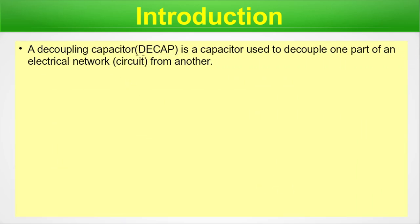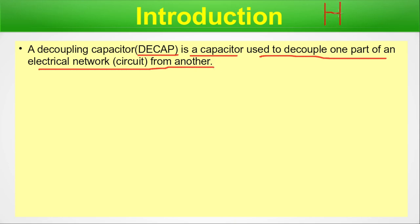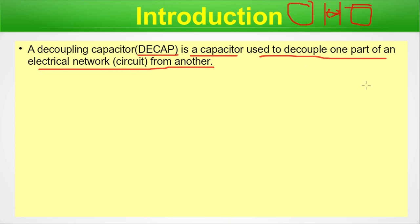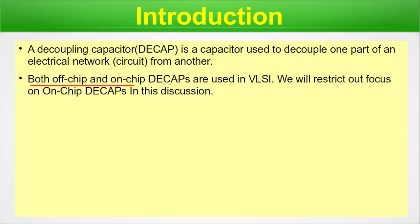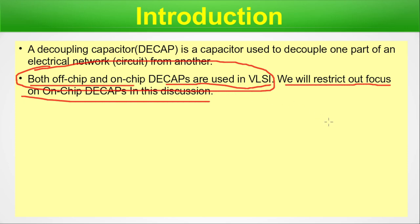Introduction. A decoupling capacitor, that is DCAP, is a capacitor used to decouple one part of an electrical network from another. Basically, we are making an electrical isolation between two parts of an electric circuit. Both off-chip and on-chip DCAPs are used in VLSI. We will restrict our focus to on-chip DCAPs in today's discussion. However, we will cover different types of DCAPs in a diagram in a later slide.